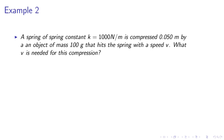An object of mass 100 gram hits the spring with a speed V. What V is needed for this compression? Half MV squared equals to half Kx squared. So we simply equate the kinetic energy to the potential energy. V equals square root of K over M times X. So we simply obtain V equals 5 meters per second.